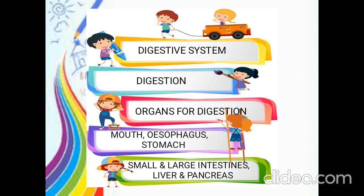So what is digestion? It is the process in which the food we eat will be broken down into simple form to produce energy. So organs for digestion are mouth, esophagus, stomach, small intestine and large intestine, liver and pancreas.